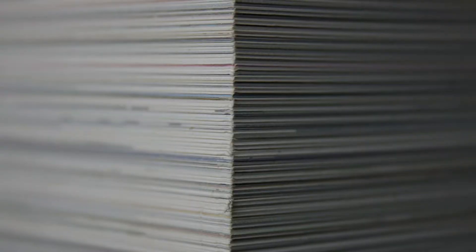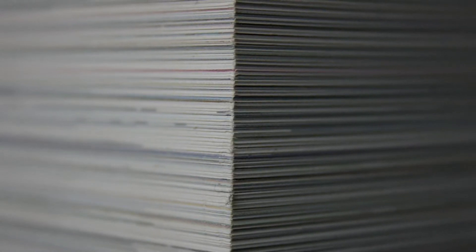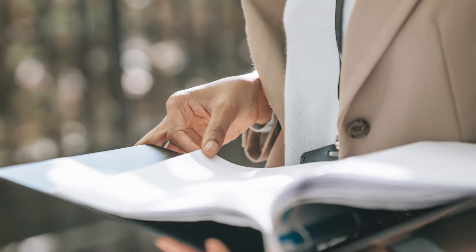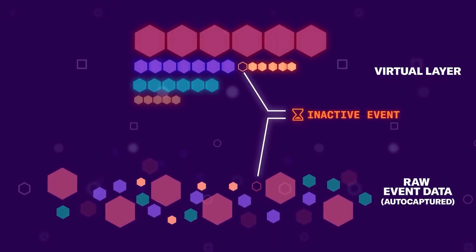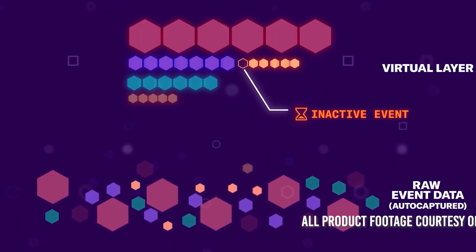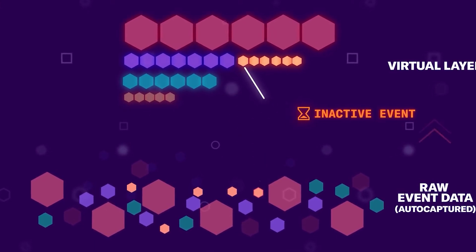Back when I did paralegal work many years ago, we dealt with a lot of paper. We'd have a group of documents we'd refer to as pristine documents, and then we'd have copies made from those — and those were the ones we worked with. In this case, Heap saves your raw event data and you work with data on your virtual layer. So no matter what you do with that data, the original raw event data will be just fine.